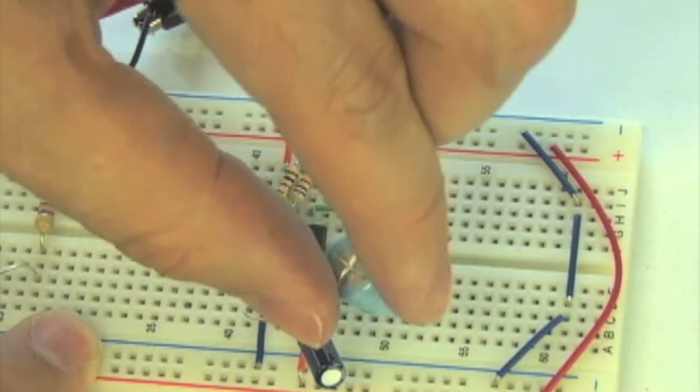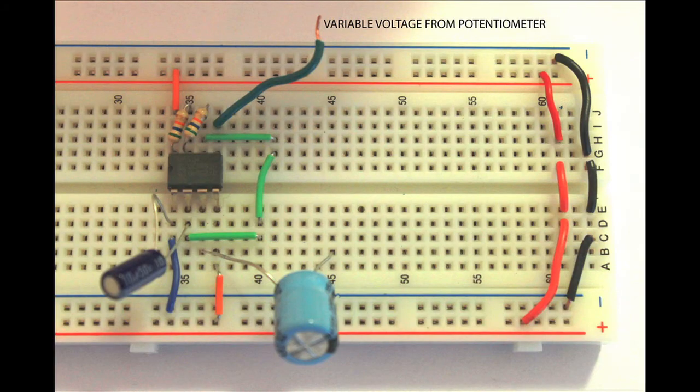We run pin 3, the output of the 7555, through a 100uF capacitor, which acts as a high-pass filter to remove any DC from the output signal. Pin 5 is connected to variable voltage from a potentiometer, which allows you to control the oscillator's frequency.